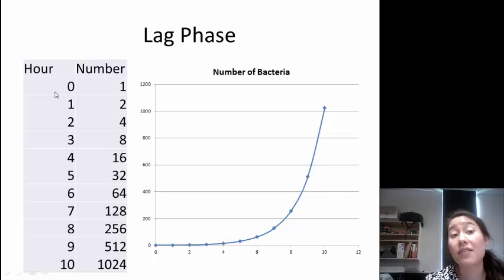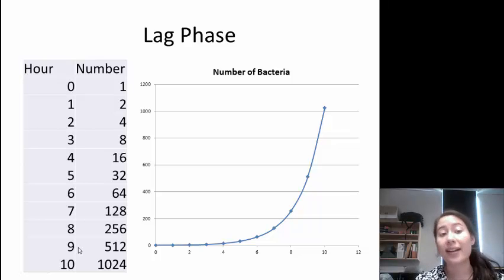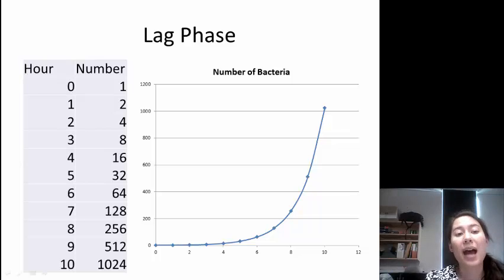Here I've given you a similar situation to question number 14 in your packet. Mine is different than yours, though, so you have to do your own math. But I've given you an hour and then the number of bacteria that exists at that hour for a bacteria that doubles once every hour. At the beginning, at hour zero, we have one bacteria. Hour number one, we have two. Then four, eight, 16.